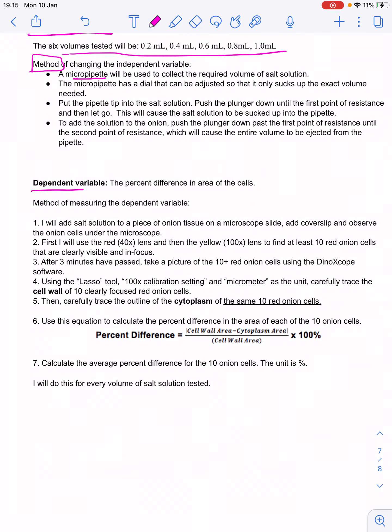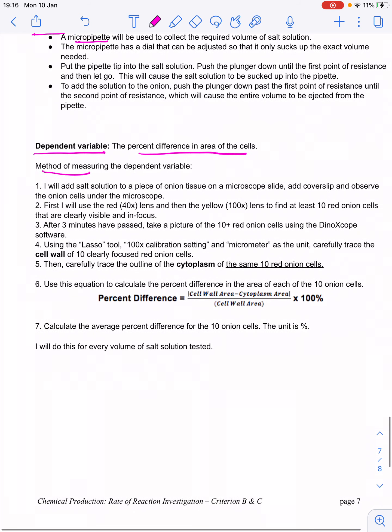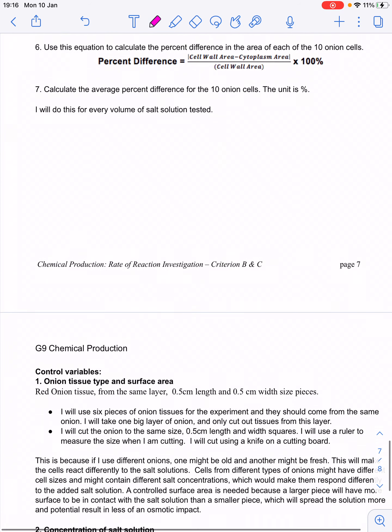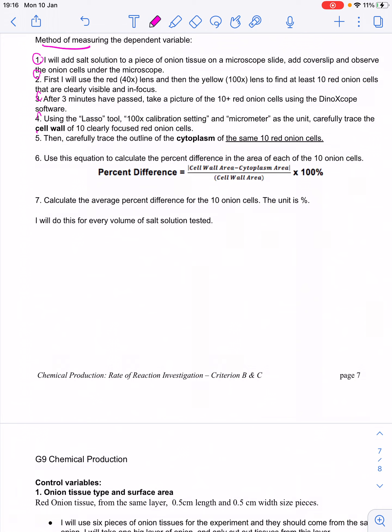Then they move on to the dependent variable. They talk about what it is and their method. And then they outline one, two, three, four, five, seven steps for how they will actually go about measuring that dependent variable. One thing that they didn't do, which they should do, is they should mention the number of repeated trials. At least I don't see it here upon quick glance. So that's something that's missing here.